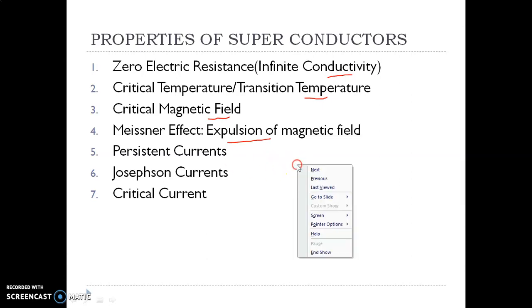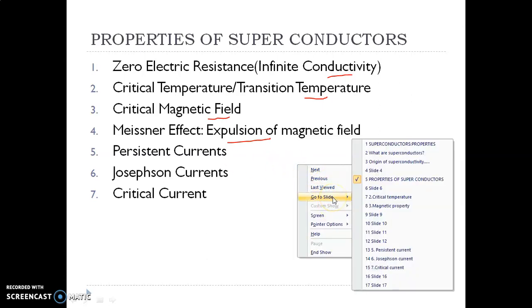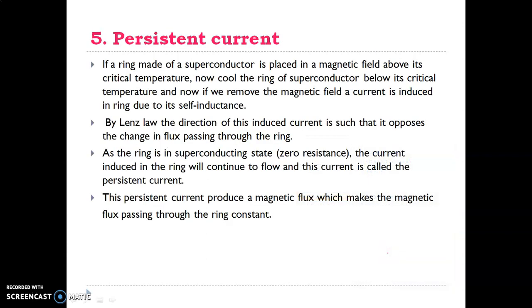Now we will discuss the persistent current. What is persistent current? Assume we have a ring that is made up of a superconductor material.